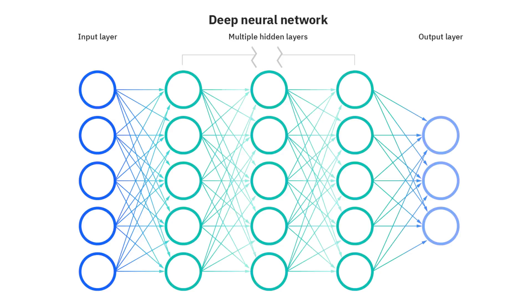It must be pointed out that all hidden layers usually use the same activation function. However, the output layer will typically use a different activation function from the hidden layers — the choice depends on the goal or the type of prediction made by the model.